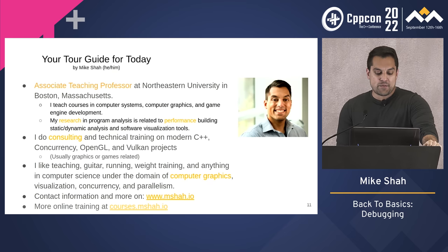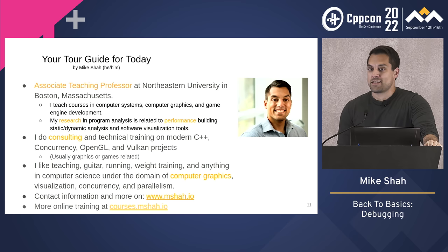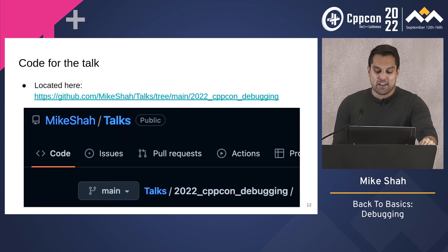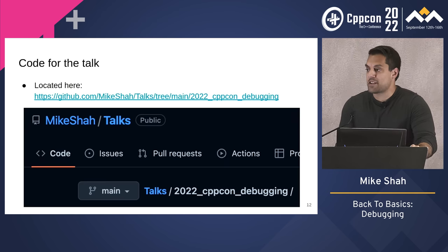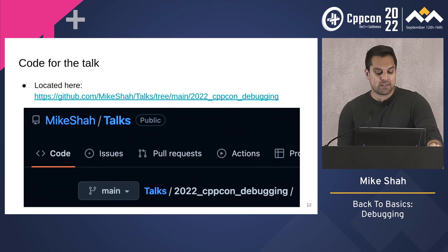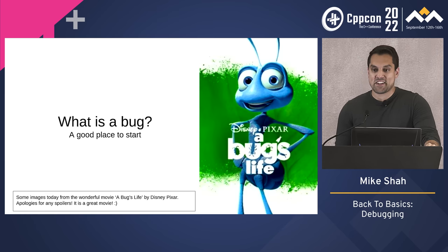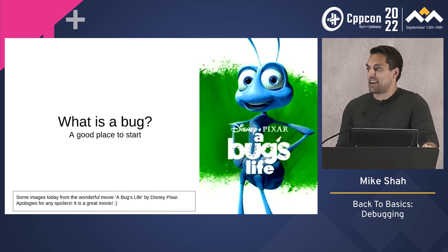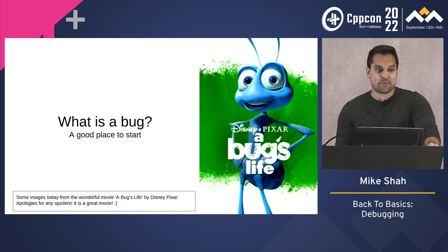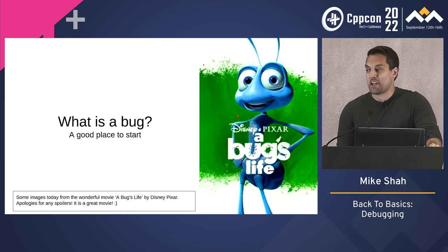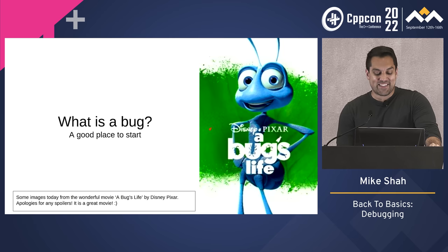A little bit about me — you can read more on my website. I primarily do work in C++ and teach as a professor. Code for this talk, if you want some exercises, is available on GitHub. And let's get started with a good place to begin: talking about what is a bug. We'll be using some characters from the Disney/Pixar movie — probably 20 years old now — regarding some bugs.